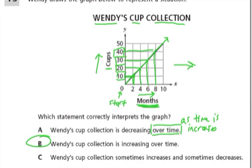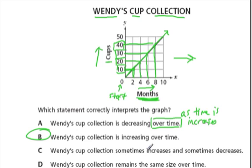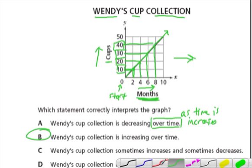But what about other choices? What else do we have? Wendy's cup collection sometimes increases and sometimes decreases. Well, let's just go back over increasing and decreasing. This green line is increasing, right? As our x values increase, so do our y values.